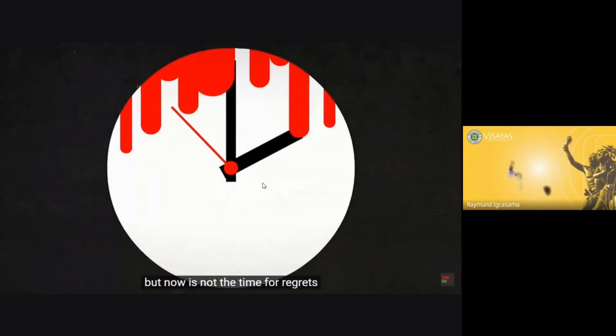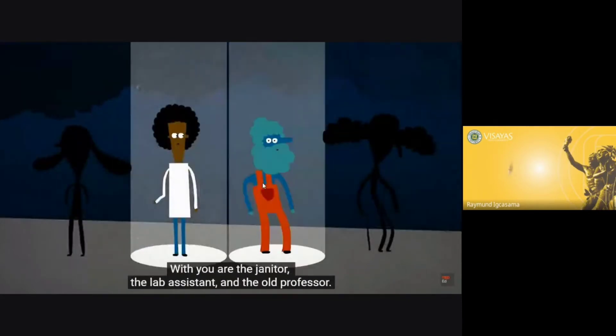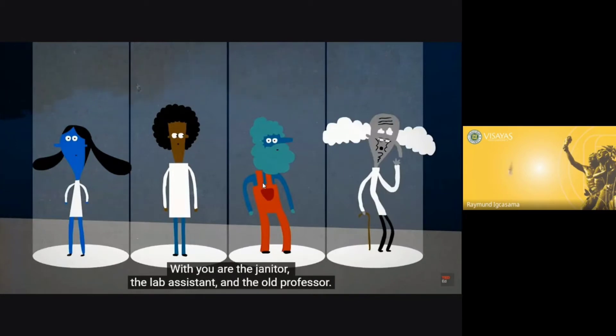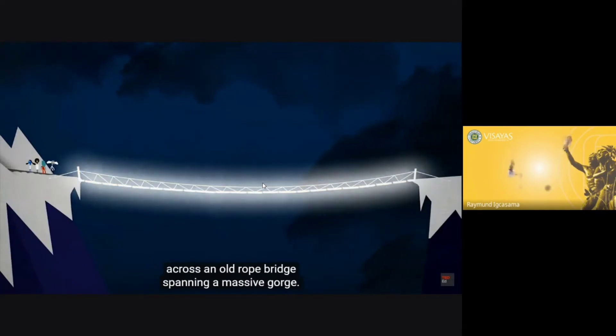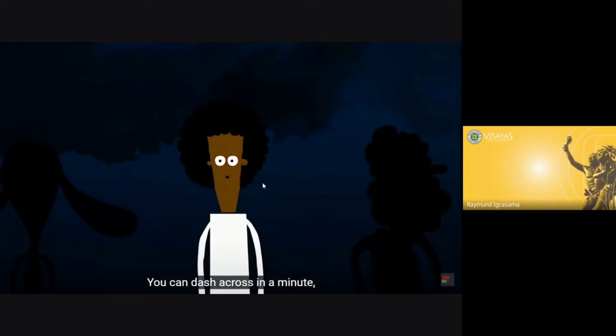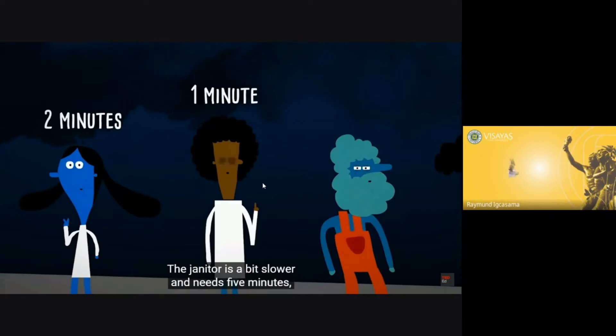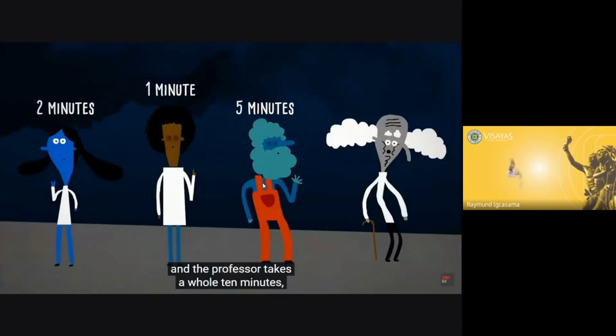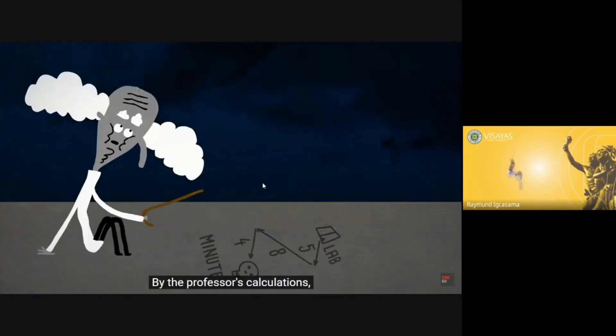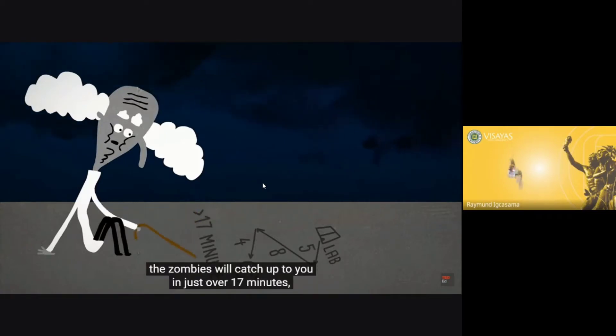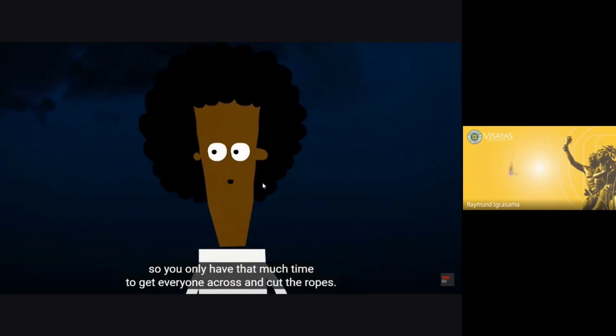But now is not the time for regrets, because you need to get away from these evil zombies fast. With you are the janitor, the lab assistant, and the old professor. You've gotten a head start, but there's only one way to safety across an old rope bridge spanning a massive gorge. You can dash across in a minute, while the lab assistant takes two minutes. The janitor is a bit slower and needs five minutes, and the professor takes a whole ten minutes. By the professor's calculations, the zombies will catch up to you in just over 17 minutes, so you only have that much time to get everyone across and cut the ropes.